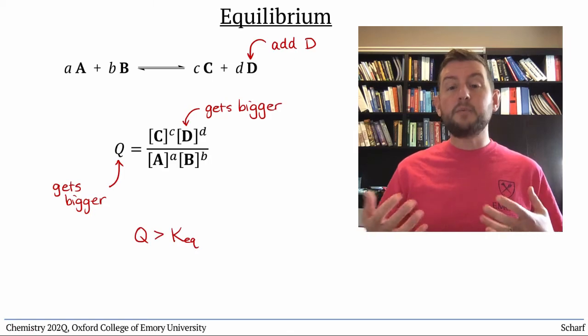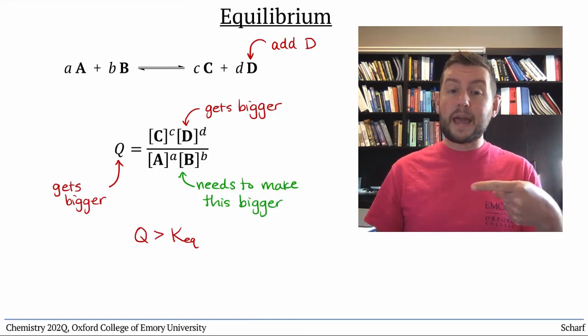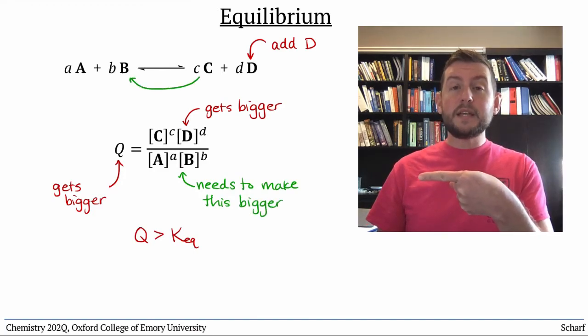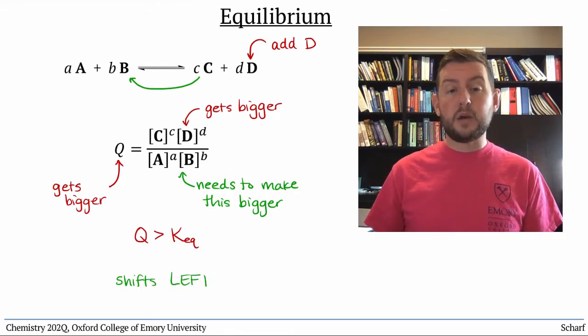To compensate and reestablish equilibrium, the system will need to make the denominator larger by making more A and B. We say that the reaction shifts to the left to reestablish equilibrium.